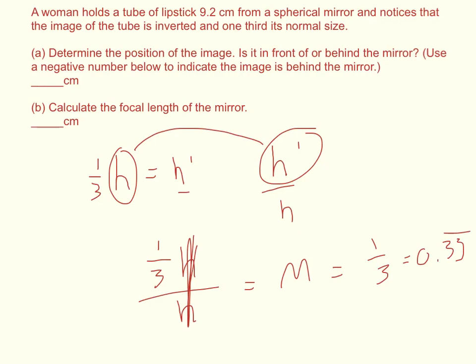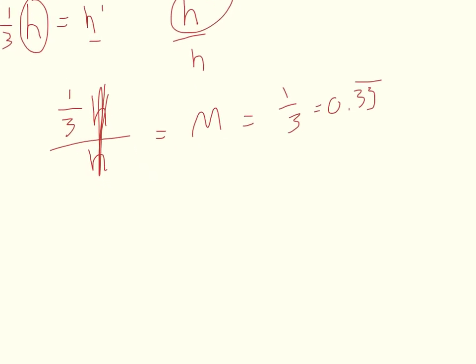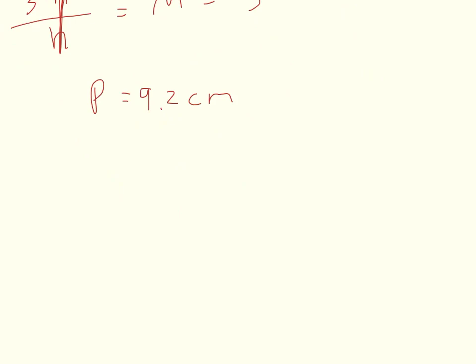Now it tells us that she sticks the lipstick in front of the mirror 9.2 centimeters. So we know the value for p. So p equals 9.2 centimeters. And then let's try to figure out what q is. It wants to know the object's placement and the focal length. So we can use the magnification equation, m equals h prime over h, which geometrically we can say is equal to negative q over p.